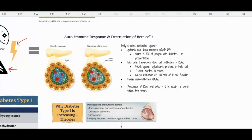What happens is the body creates antibodies against that virus, but it's also creating antibodies specifically against islet cells. Those are called islet cell antibodies, or ICAs. These are destroyed over time - this is the cause of that reduction of 80 to 90% of beta cell function, because those antibodies are actually attacking the islet cells.